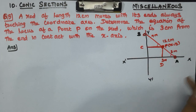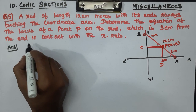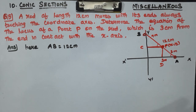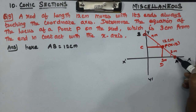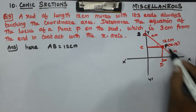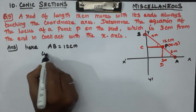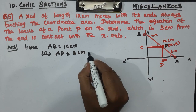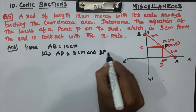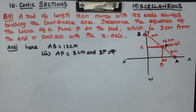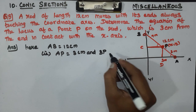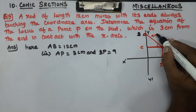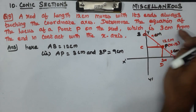Let's say rod AB. This is A, this is B. This is the x-axis. AB, the rod, is how many? 12 centimeters. AP — this point — AP value is 3 centimeters. What is BP? BP equals 12 minus 3, which is 9 centimeters. So this is 9 centimeters and this is 3 centimeters.